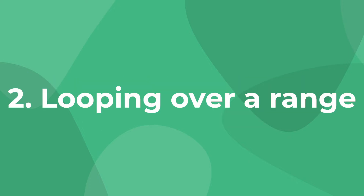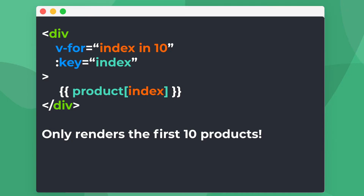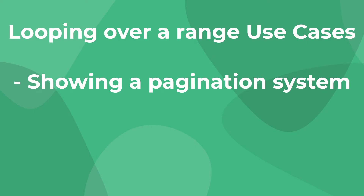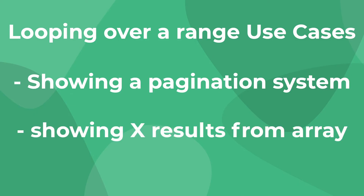The second tip is that we can use Vue for to loop over a range. While most of the time we use v-for to loop over an array or an object, we can easily loop over a range like this. This is useful, for example, if we wanted to create a pagination system for an online store and only wanted to show 10 products per page. This is a simple but very effective tip for Vue for loops.